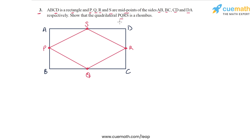This is similar to question 2 of this exercise. In question 2, the midpoints of a rhombus were joined and the resulting quadrilateral we had to show was a rectangle. In this case it's the other way around — the midpoints of a rectangle are joined and we have to show that the resulting quadrilateral is a rhombus.